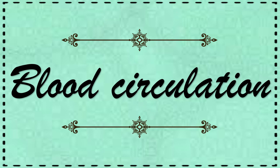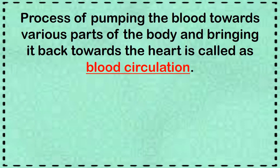Now we shall learn about blood circulation through the heart, or the functioning of the heart. The process of pumping blood towards various parts of the body and bringing it back to the heart is called blood circulation. To maintain the continuity of circulation, the heart alternately contracts and relaxes. Consecutive single contraction and relaxation of the heart constitutes a single heartbeat, and this is how the blood circulates.